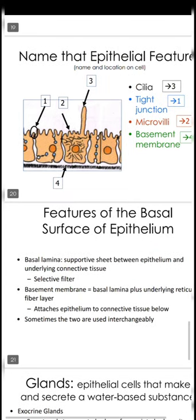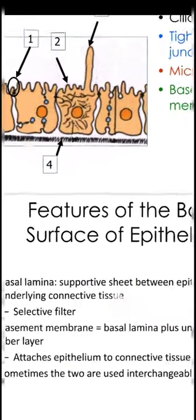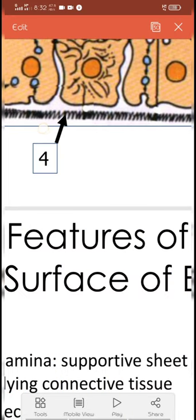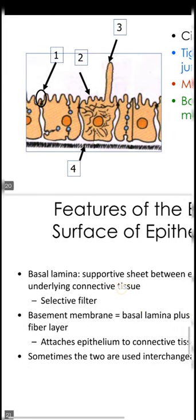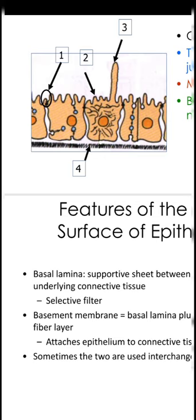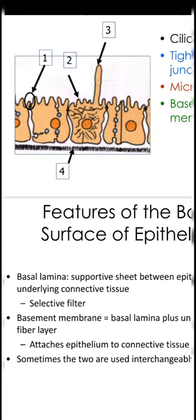Now let's talk about the basement membrane. The basement membrane is an interchangeable term with basal lamina. Basal lamina is the sheet present between the epithelium and the underlying connective tissue. Underneath the basal lamina there is another fibrous layer — together they are known as the basement membrane. These terms are interchangeable. The main function of these structures is to attach the epithelium to the underlying tissue.